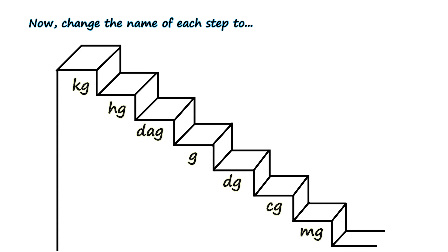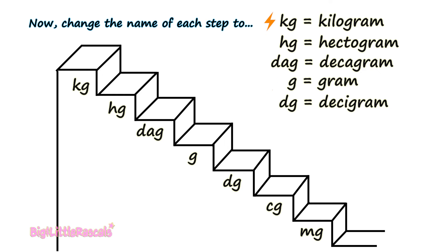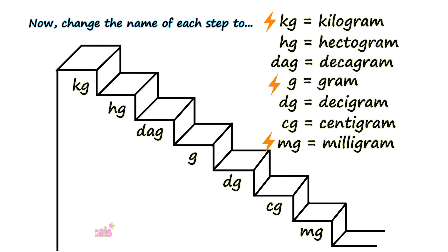Now how about kilogram to gram? Let's visit our stairs of measurement again, this time for weight: kg (kilogram), hg (hectogram), dag (decagram), g (gram), dg (decigram), cg (centigram), and mg (milligram). The most commonly used are kilogram, gram, and milligram.